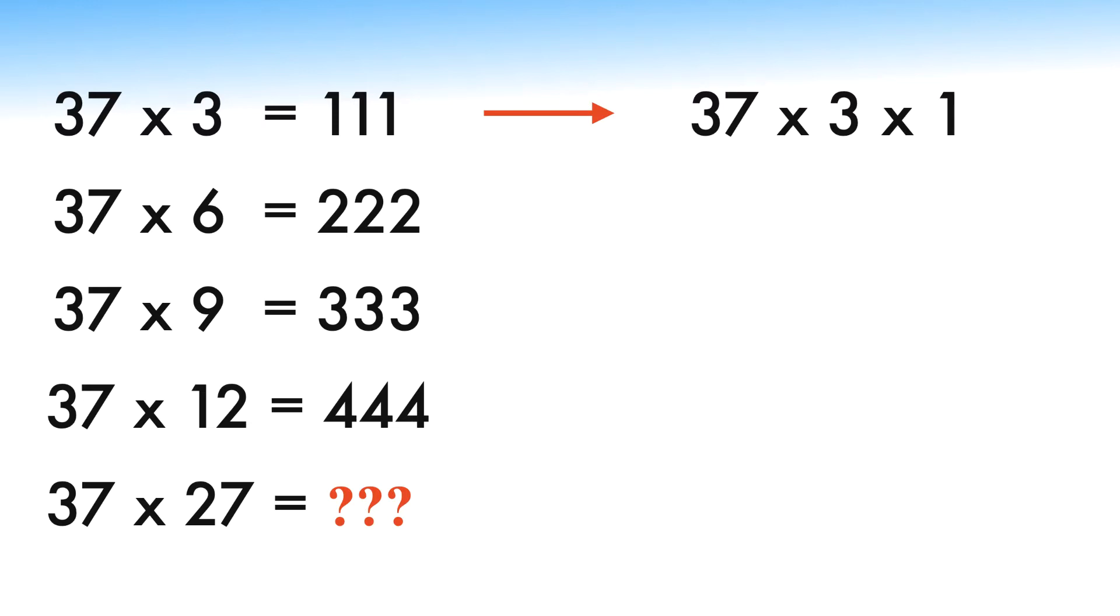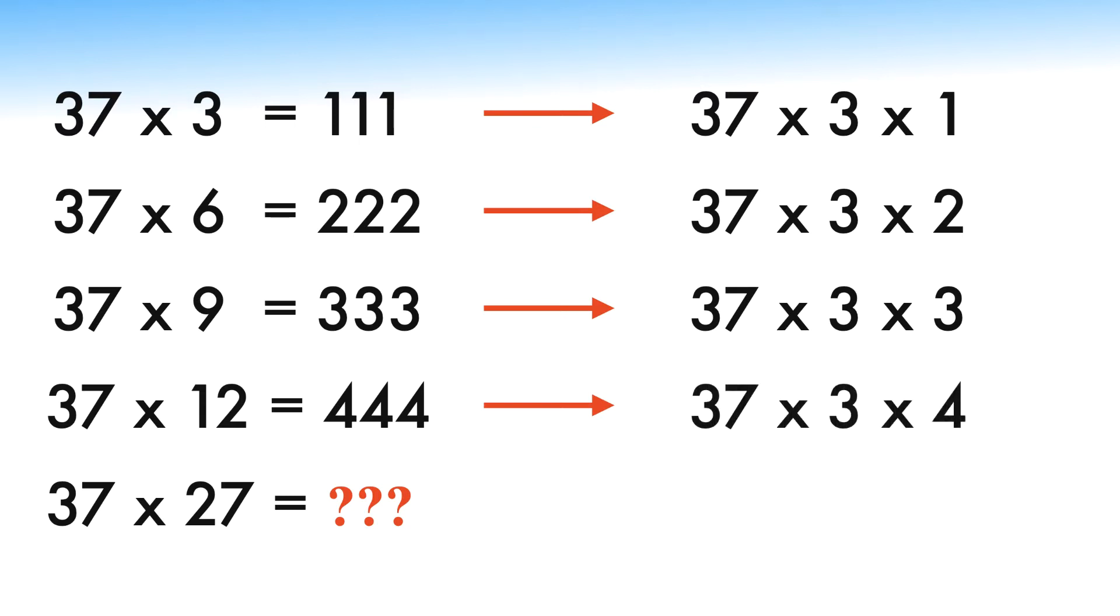Similarly, 37 times 6 equals 222 can be written as 37 times 3 times 2, which is equal to 222. And 37 times 9 equals 333 can be written as 37 times 3 times 3, which is equal to 333. And 37 times 12 equals 444 can be written as 37 times 3 times 4 equals 444.